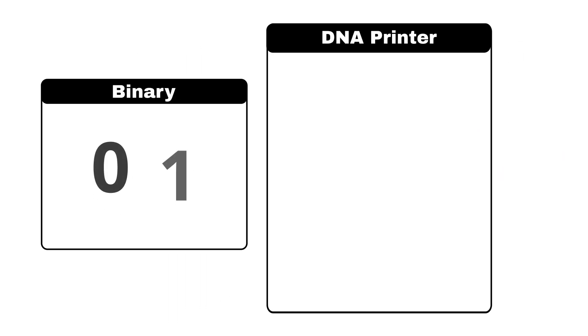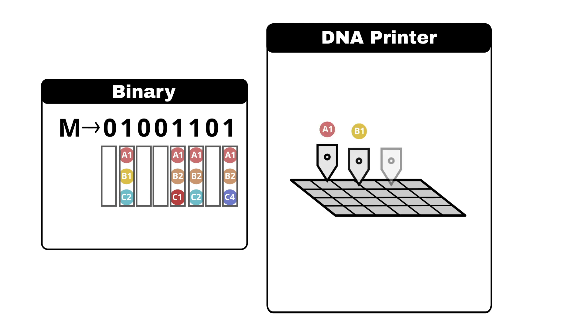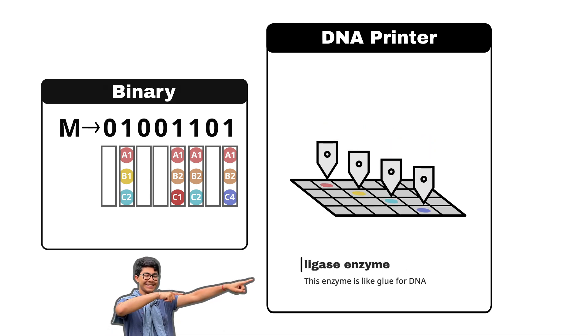Computers store information in binary. Each DNA identifier represents a one and its location. Slots without an identifier are zeros. Then a DNA printer deposits oligonucleotides onto webbing and uses a ligase enzyme to join them together.